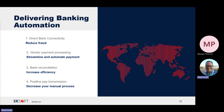To quickly recap positive pay: files can be transmitted to the bank as part of the payment journal posting, on a job queue schedule, or on demand. We also reviewed the options for including different types of voids and checks in the transmitted file. And with that, I'll hand it back to Morgan.